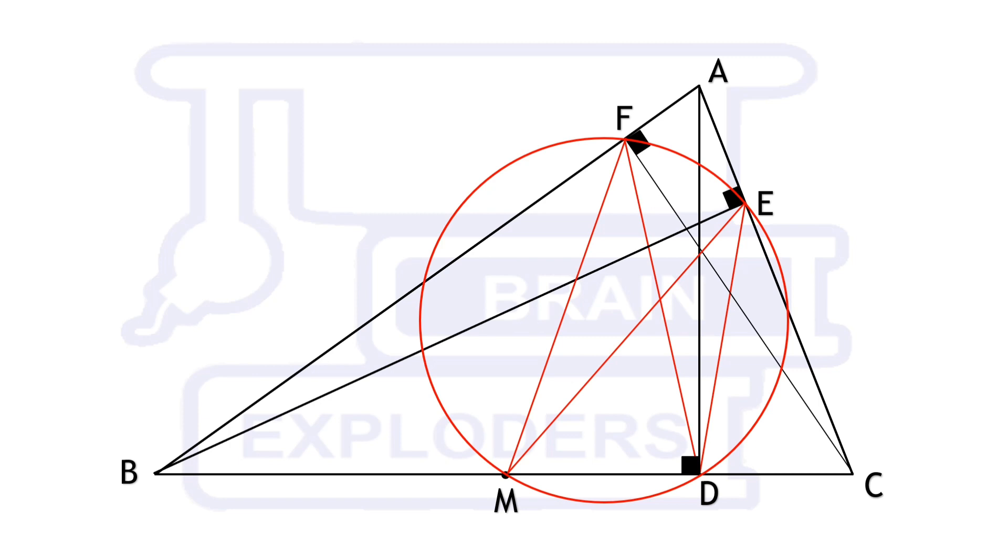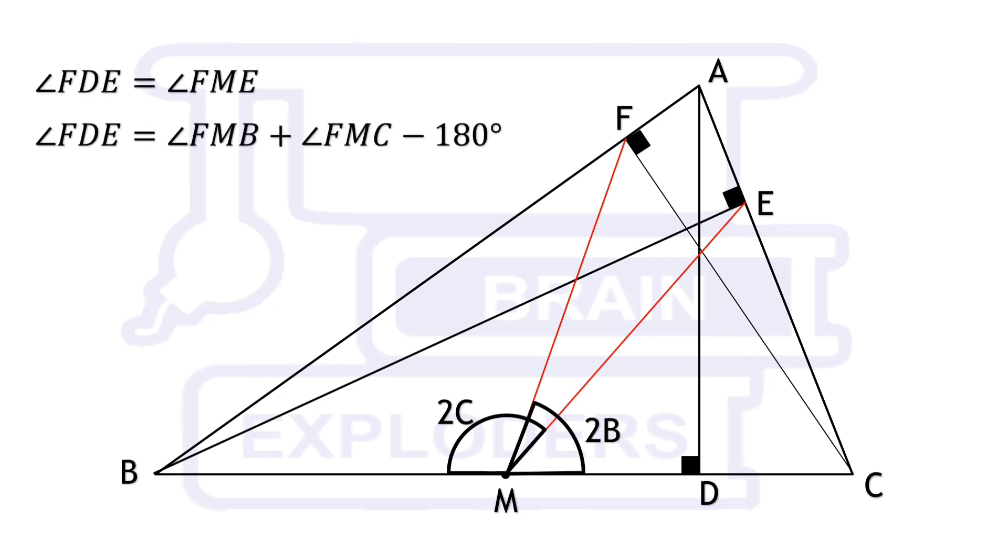Angle EMB is twice angle ECB because ECB is a right angle triangle. Similarly, angle FMC is twice angle FBC. The sum of these angles exceeds 180 by angle FME.